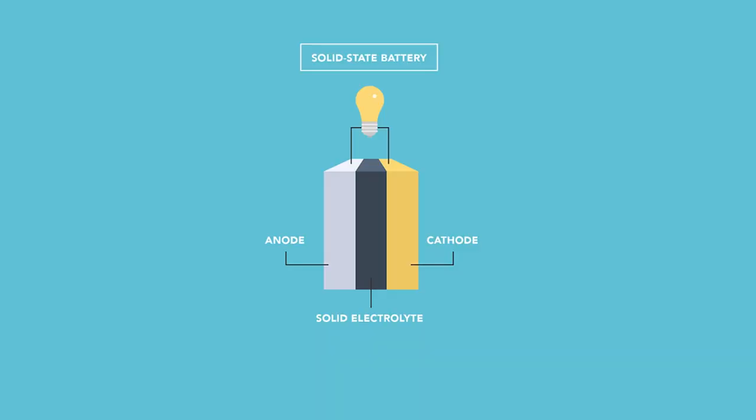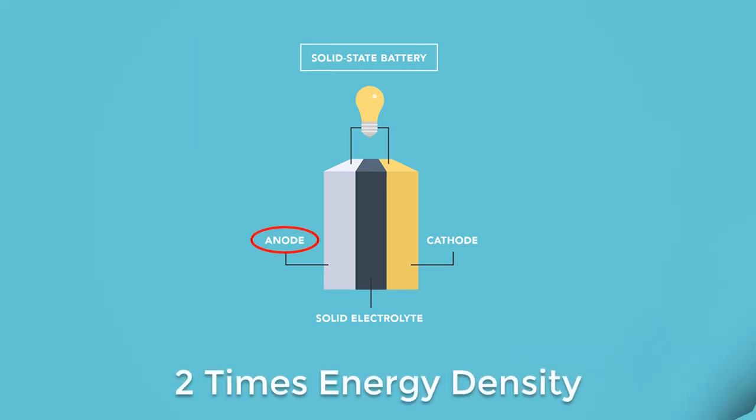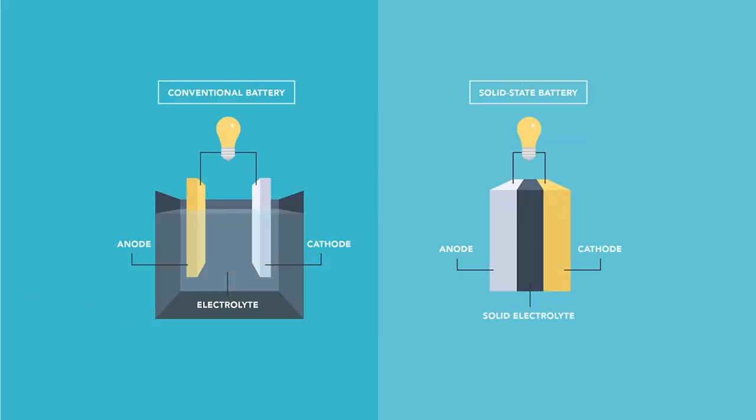Solid-state batteries work on the principle of using a lithium metal anode. These anodes mean cells can have up to two times the energy density of traditional liquid electrolyte cells, which use a graphite anode.